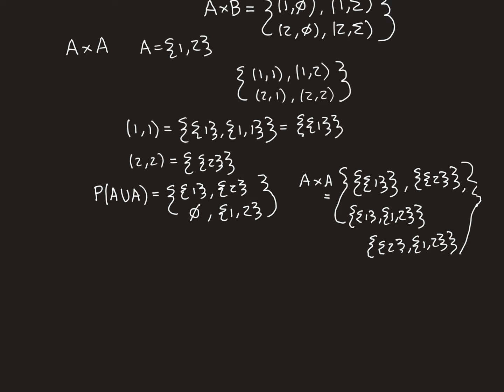That concludes this video on the Kuratowski construction of ordered pairs. It's extremely important to understand this because ordered pairs and Cartesian products are going to be used to define relations on sets, and from relations we're then going to define functions. Neither of these concepts requires anything new atomically defined — it can all be defined from the things we already have, because of the Kuratowski construction that defines ordered pairs in terms of what we've already got.